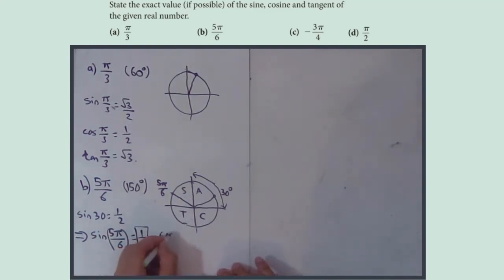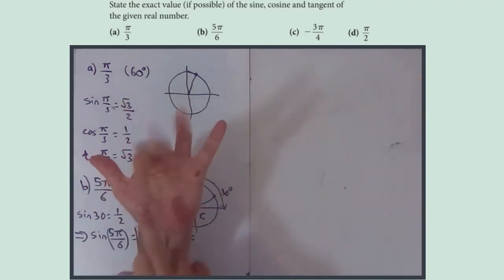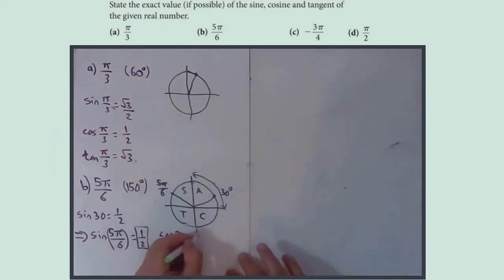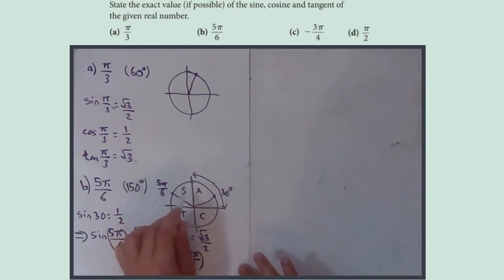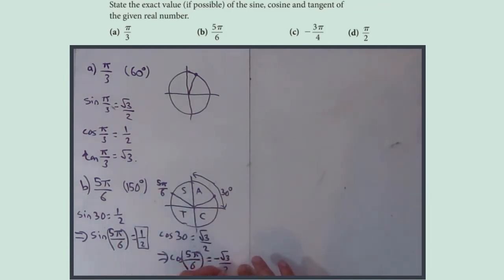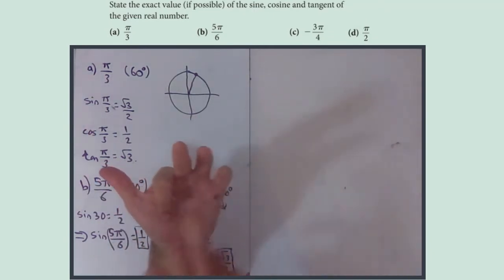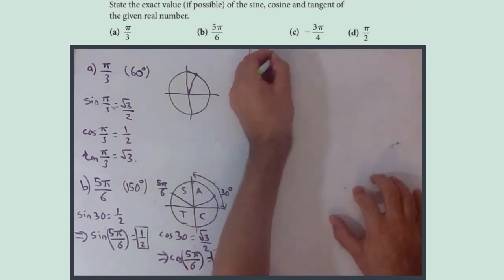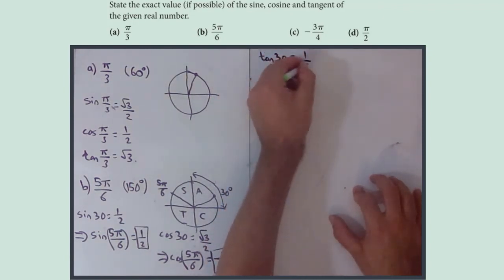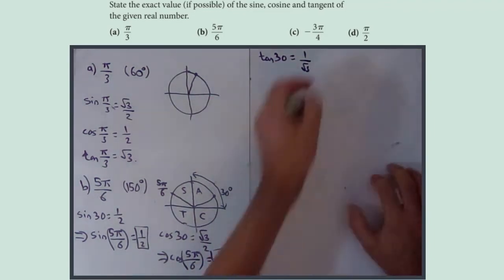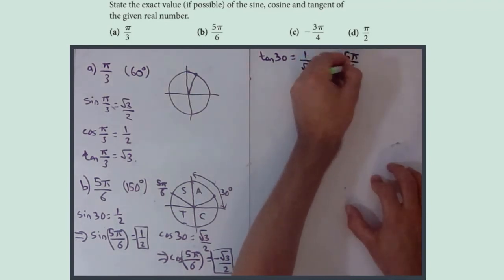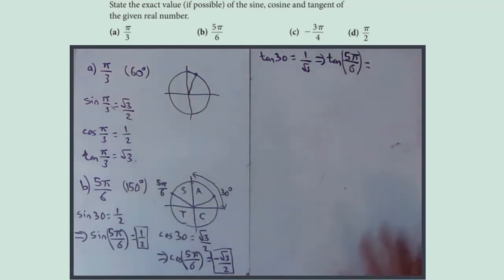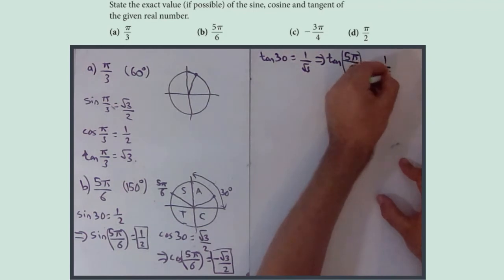Cos(30°) from the hand is √3/2, so cos(5π/6) = −√3/2 because cosine is negative in the second quadrant. Tan(30°) is √1/√3 = 1/√3, so tan(5π/6) = −1/√3, which you could rationalize to −√3/3.